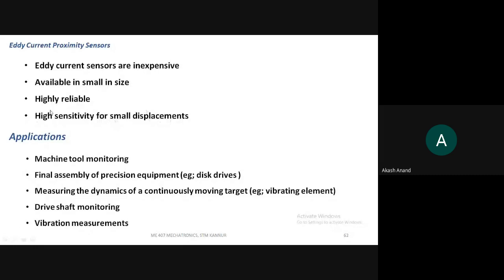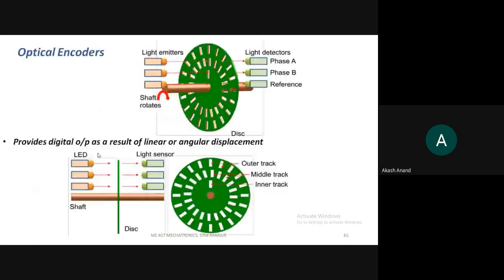These types of sensors are used in machine tool monitoring, final assembly of precision equipment, measuring the dynamics of a continuously moving target, drive shaft monitoring, and vibration measurements. These are the application areas for eddy current sensors.